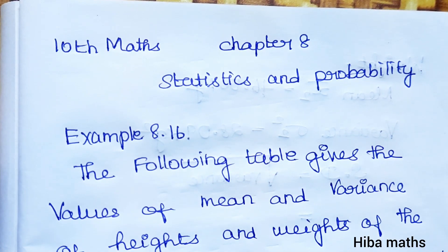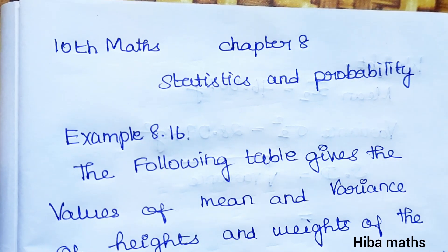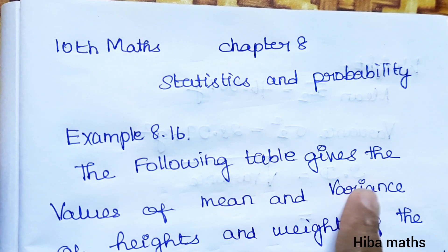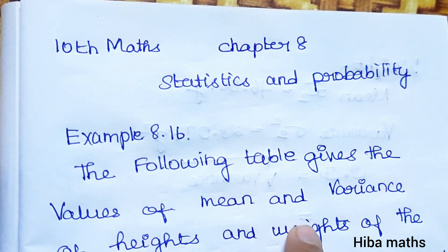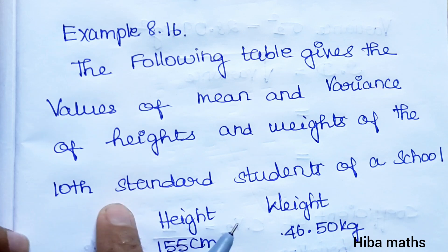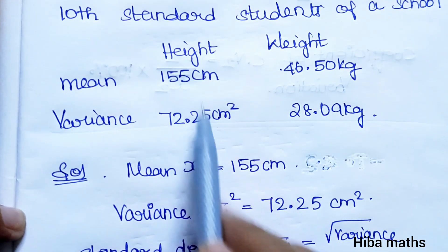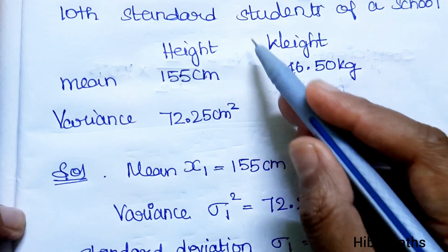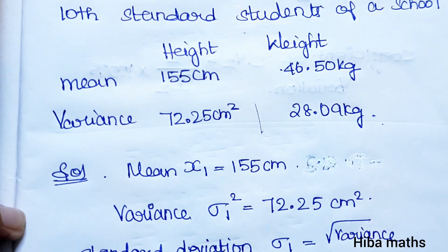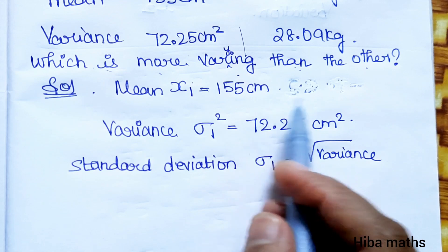Hello students, welcome to Hiba Max 10th Standard. Chapter 8: Statistics and Probability, Example 8.16. The following table gives the values of mean and variance of heights and weights of the 10th standard students of a school. Which is more varying than the other?